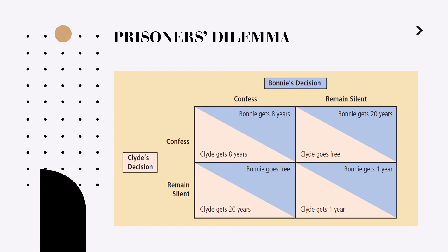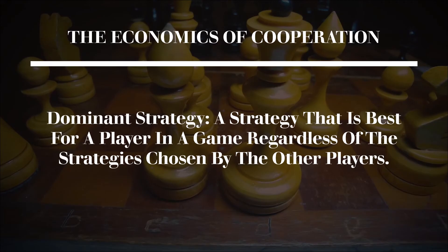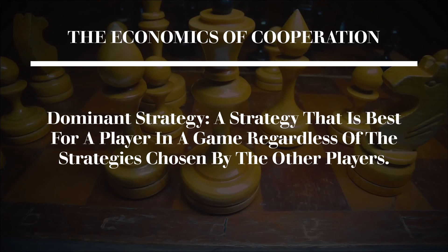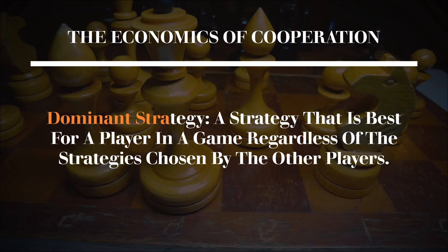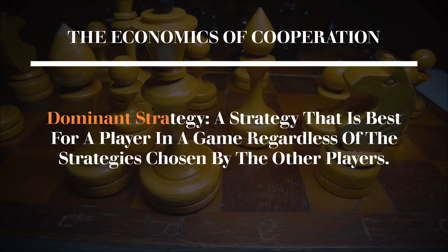To minimize their loss, both of them will most probably confess, although it was more beneficial for each of them to remain silent. So confessing is a dominant strategy for both Bonnie and Clyde. The dominant strategy is a strategy that is the best for a player in a game regardless of the strategies chosen by the other players.